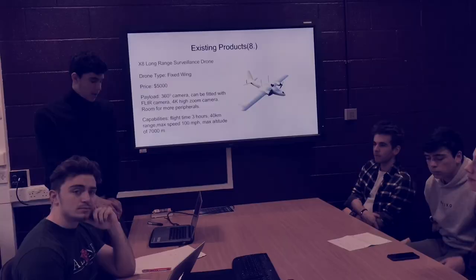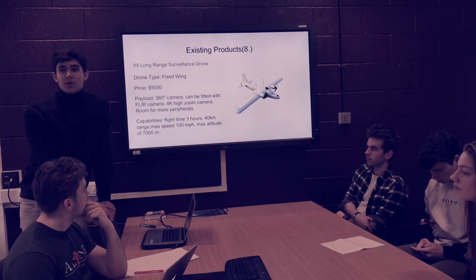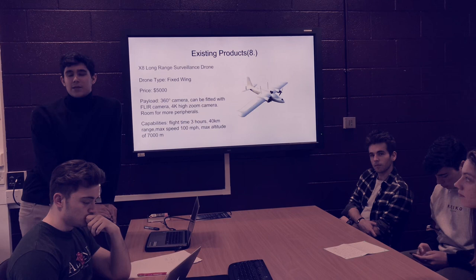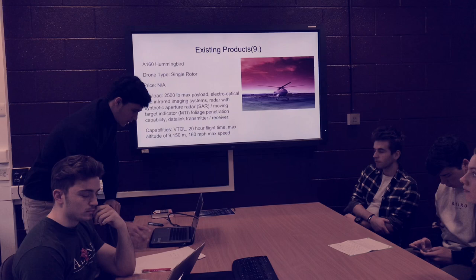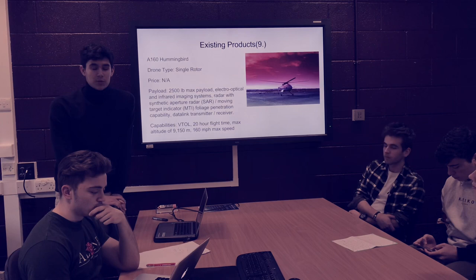Another existing product we looked into was a fixed twin drone which has a low price and many features that can be added, such as a FLIR camera and a 360 camera, and it has a very long flight time, although its disadvantage is that it doesn't have vertical takeoff. We also looked into a single rotor drone which has a really good flight time and very high max speed and altitude, although its disadvantage is that it's too big.